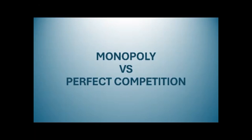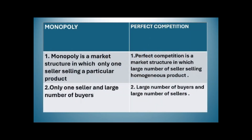Assalamualaikum everyone. In this video we will know the difference between monopoly and perfect competition. Monopoly is a market structure in which only one seller sells a particular product. Perfect competition is a market structure in which a large number of sellers sell a homogenous product. In a monopoly market there is only one seller, while in perfect competition there are a large number of buyers and a large number of sellers.